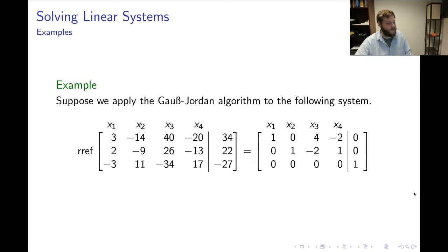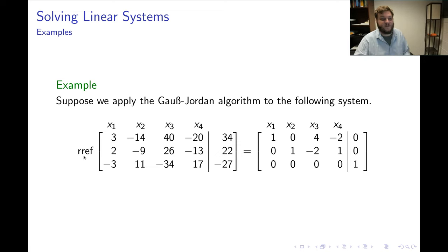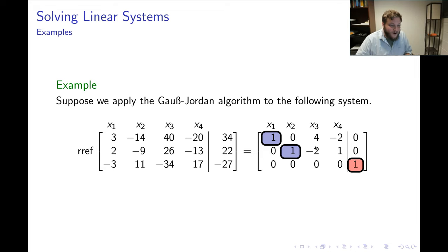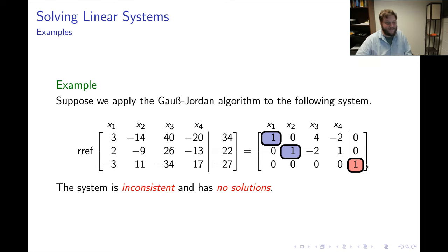Here's an example of a system with three equations and four variables. After row reducing, I find two pivots in the coefficient matrix (rank 2), but also a pivot in the augmented column — making the entire augmented matrix rank 3. Since rank(A) = 2 is strictly less than rank([A|B]) = 3, the system is inconsistent with no solutions. It wasn't easy to see in the original form, but it's easy to see after row reduction.